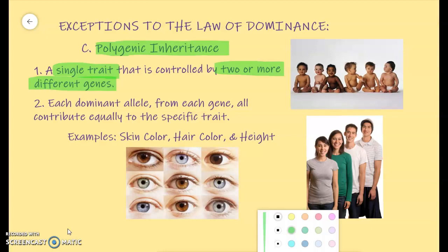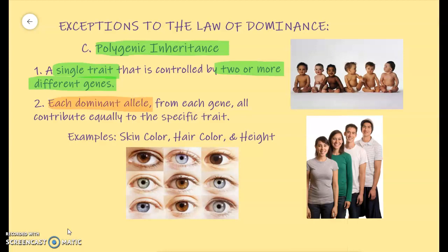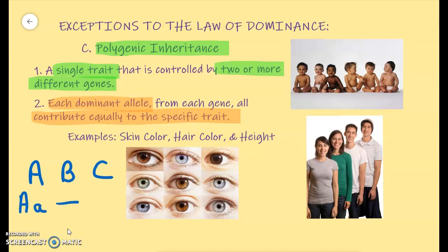With a polygenic inheritance problem, our number one goal is to figure out how much does each dominant allele from a gene contribute to that specific trait. So you could have, for example, three genes — gene A, gene B, and gene C. Each one is going to have a dominant version and a recessive version. What we want to figure out is how much to a trait does a dominant A, dominant B, or dominant C contribute? And all three of these, even though they're different genes, will contribute equally to that specific trait.